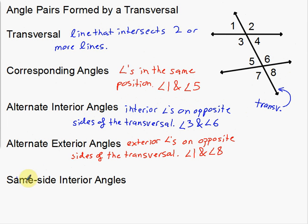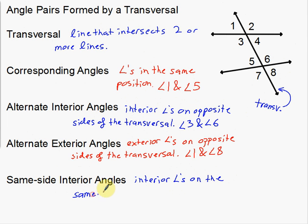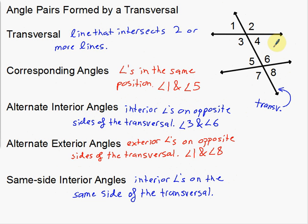Last but certainly not least — same side interior angles. These are interior angles that are on the same side of the transversal. The vocab words are really nice because they tell you exactly what they are. We're back to looking at interior angles three, four, five, and six. But these angles are going to be on the same side. For example, angle four and angle six are on the same side — that's an example of same side interior angles.